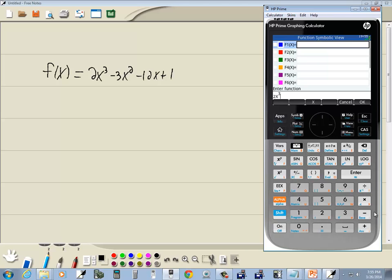Right arrow, get out of the exponent. Minus 3x, and then our x squared, minus 12x plus 1. Enter.